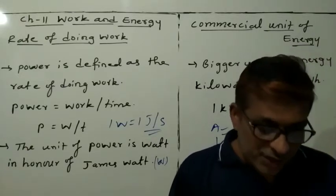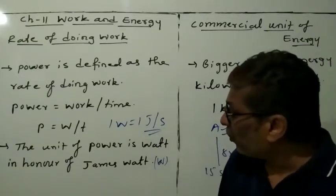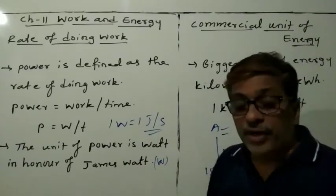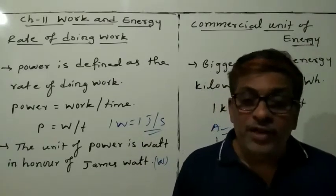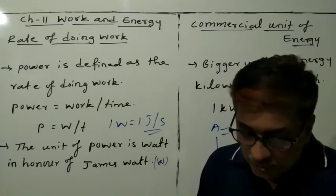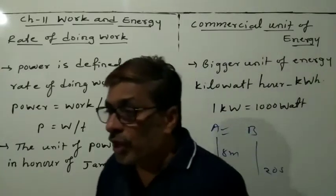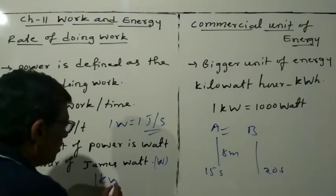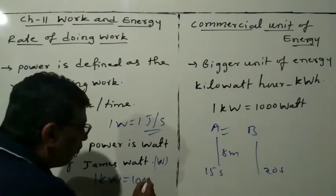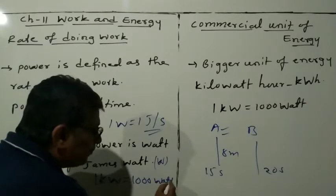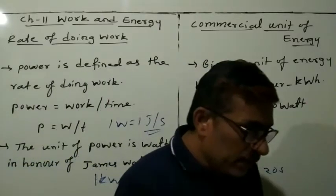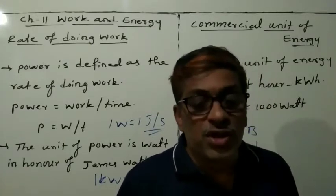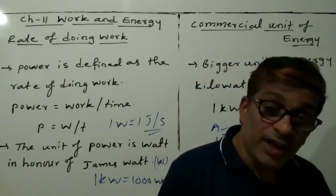One watt. We also express power in larger units — that is, kilowatt. One kilowatt is equal to one thousand watts. One kW equals one thousand joule per second.